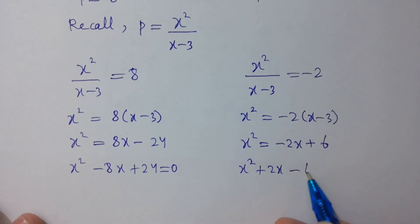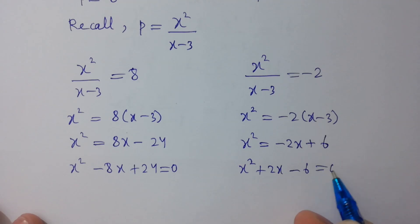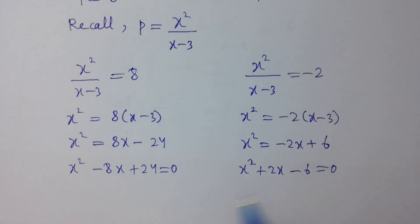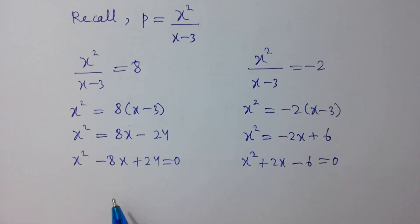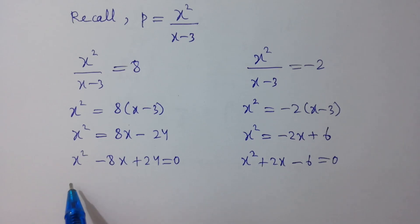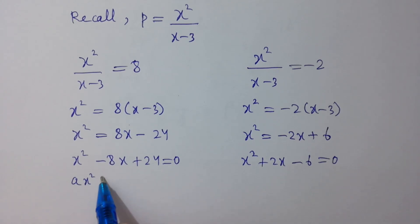Both are quadratic equations. We apply the quadratic formula x = (-B ± √(B² - 4AC)) / 2A to each.